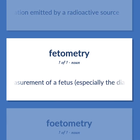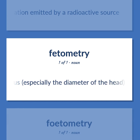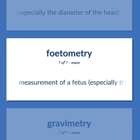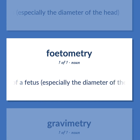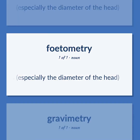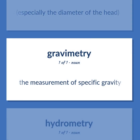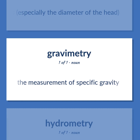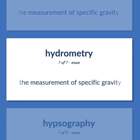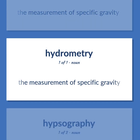Dosimetry: measuring the dose of radiation emitted by a radioactive source. Fetometry: measurement of a fetus, especially the diameter of the head. Densitometry (specific gravity): the measurement of specific gravity.